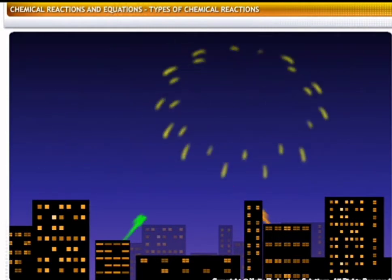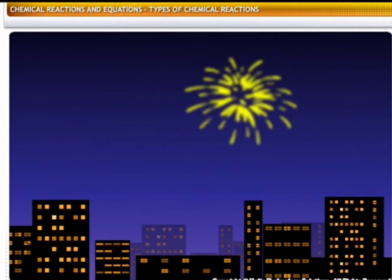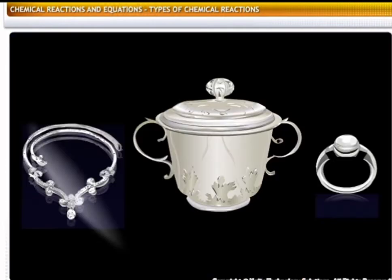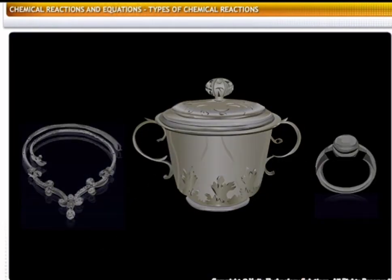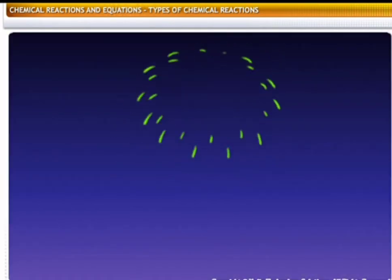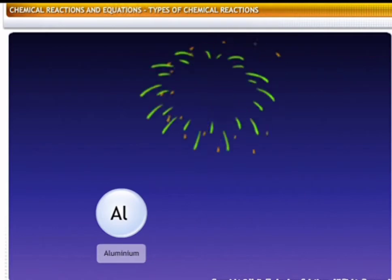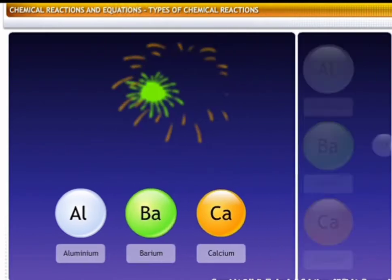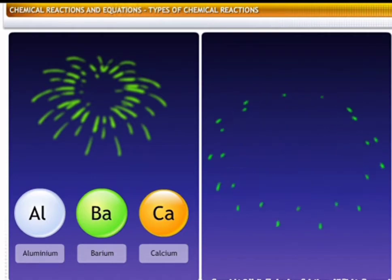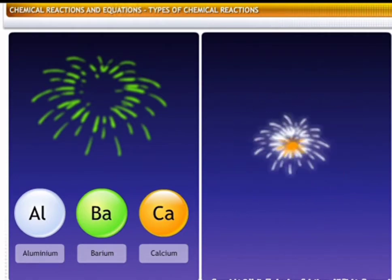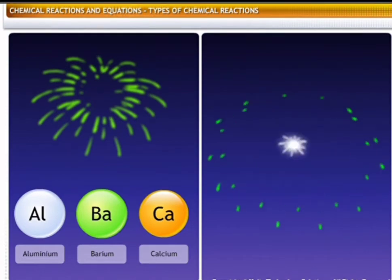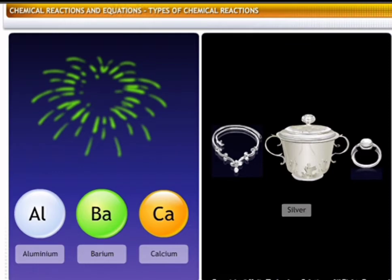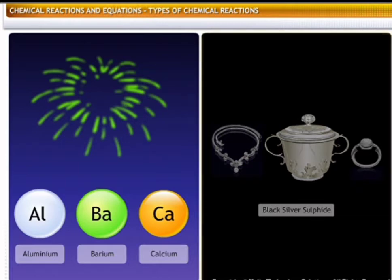Do you know that the brilliance of colors of crackers is a result of chemical reactions? Have you ever wondered why silver gets tarnished? Crackers contain chemical substances like aluminium, barium, calcium, etc., that burn in oxygen to impart a silvery white sparkling effect with green and orange colors. These elements get oxidized when you burn crackers. Similarly, silver reacts with hydrogen sulfide in air and forms black silver sulfide.